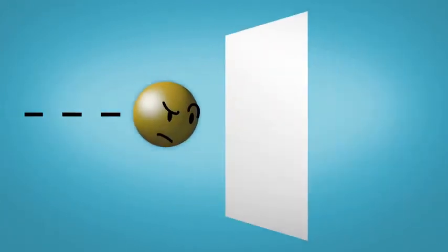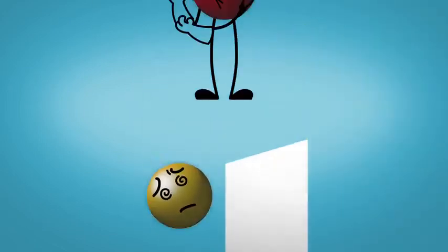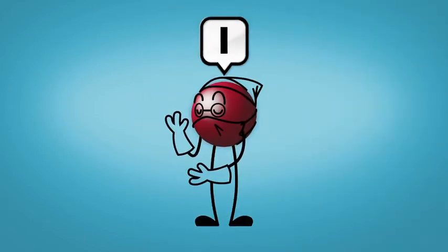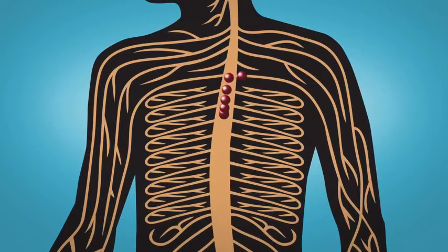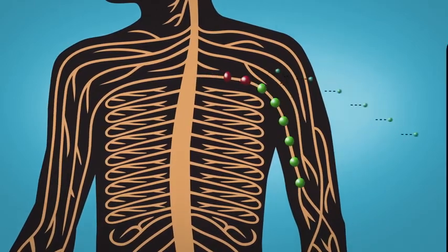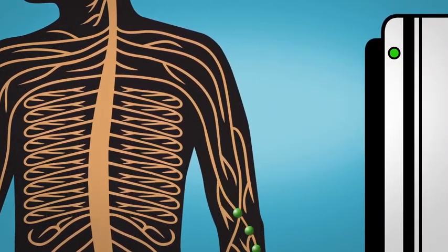Beta particles penetrate much further through materials than alpha can. Radioactive atoms are used in medicine as tracers to show where chemicals travel in the patient. Beta particles are emitted and have enough energy to emerge from the body and be detected.